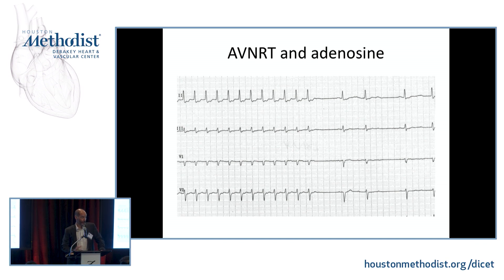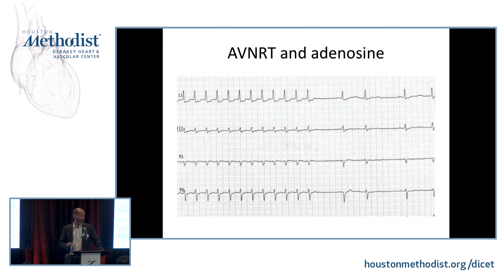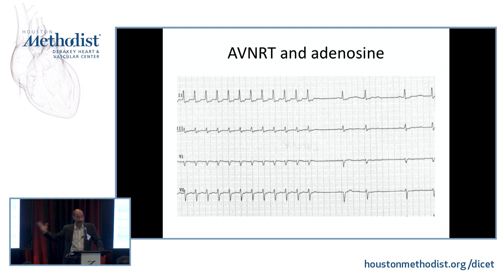We give adenosine and it stops, because we block conduction in the AV nodal tissue. This illustrates that AVNRT depends on the AV node. Adenosine blocks conduction in the AV node — if the AV node is mechanistically involved with the tachycardia, it will stop it. If it's not involved, it will unmask it. If it's atrial flutter, which doesn't care about the AV node, you will see the flutter waves. AVNRT will stop with adenosine provided you give enough to reach the AV node.